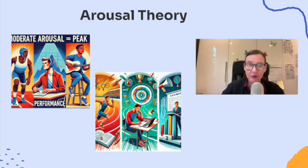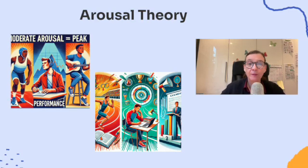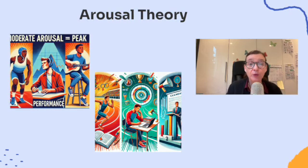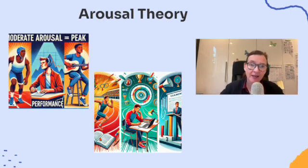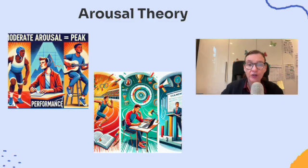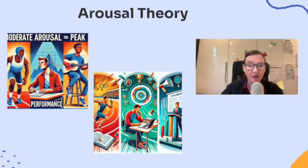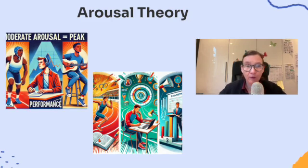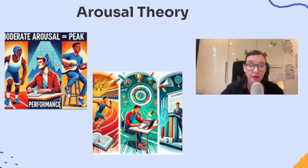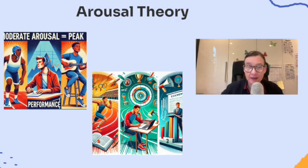Now let's look at arousal theory — a fun and fascinating look at how we stay motivated. People are motivated to maintain an optimal level of arousal, meaning we want to find that sweet spot between being bored and being way too stressed out. This is where the Yerkes-Dodson Law comes in — it shows the relationship between arousal and performance. Too little arousal and you're unmotivated with low performance; too much and your performance drops.